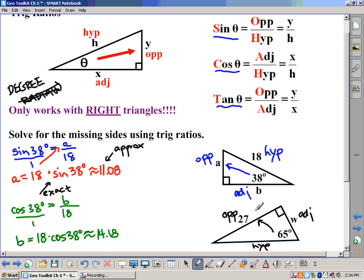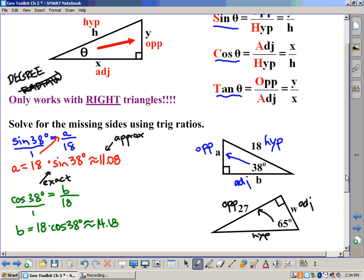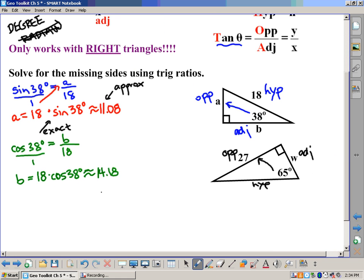So in this case, we've got opposite. We need to know adjacent. So that would be tangent, because opposite divided by adjacent is tangent. So what we'd say here is we'd say tangent of 65 degrees equals 27, which is the opposite, divided by the adjacent, which in this case is W.